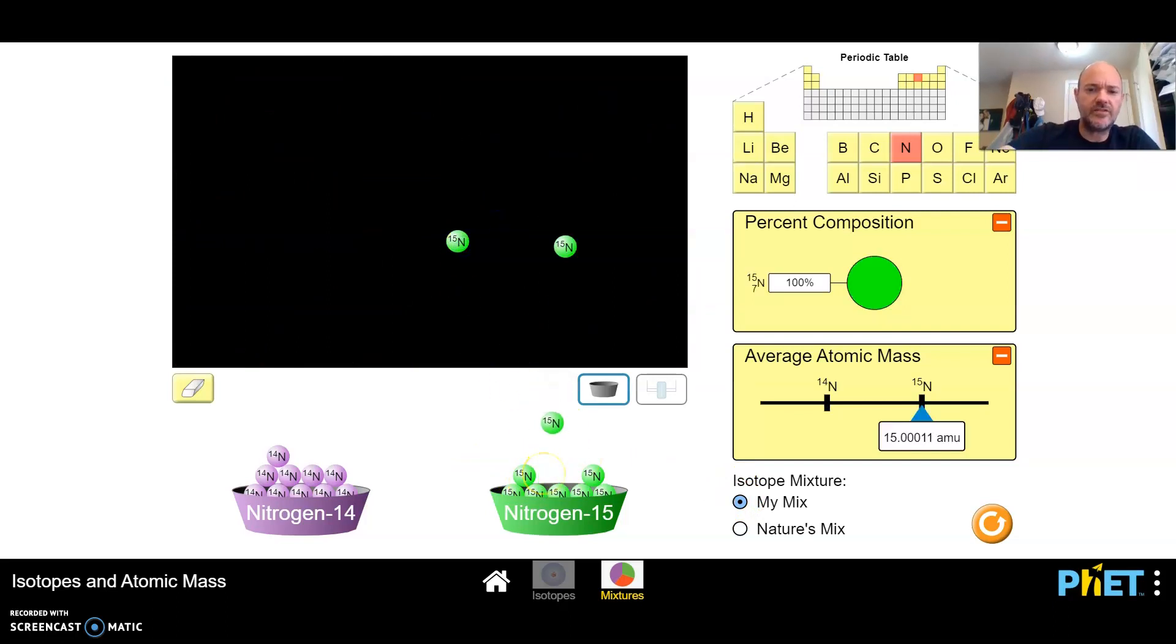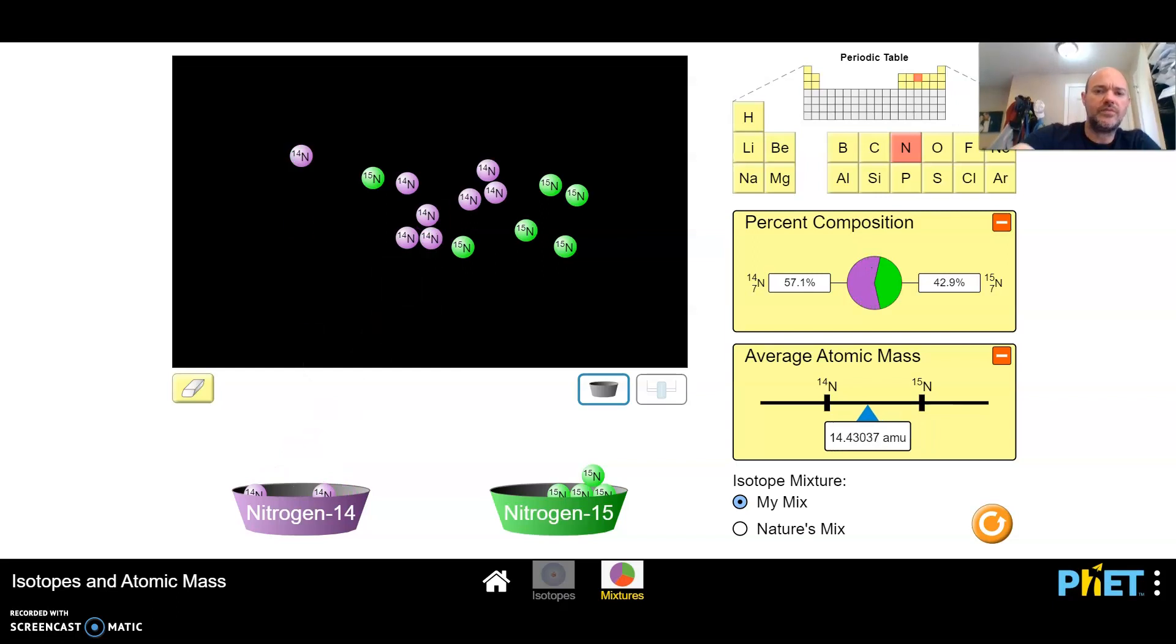So we're looking at nitrogen right now. I'm just going to put a bunch of nitrogen atoms in here and you can see how putting more or different nitrogen atoms affects the percent composition, affects the average atomic mass of this. So this is your mix. But when we come and look at nature's mix, we see that